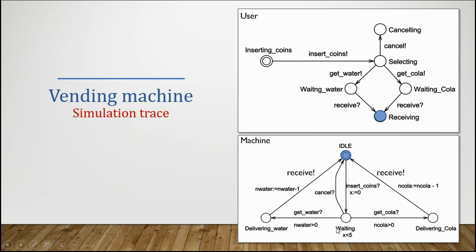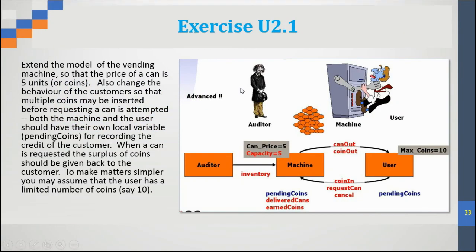Once the user receives, the machine returns to idle. There are some constraints here — for example, we cannot let the machine wait forever, so we put a waiting timeout. Also, regarding cola and water, we have a limited number of each. Once we deliver one cola, we reduce the cola count. Once we deliver water, we reduce the water count. At the beginning, we initialize the maximum limited number of cola and water.